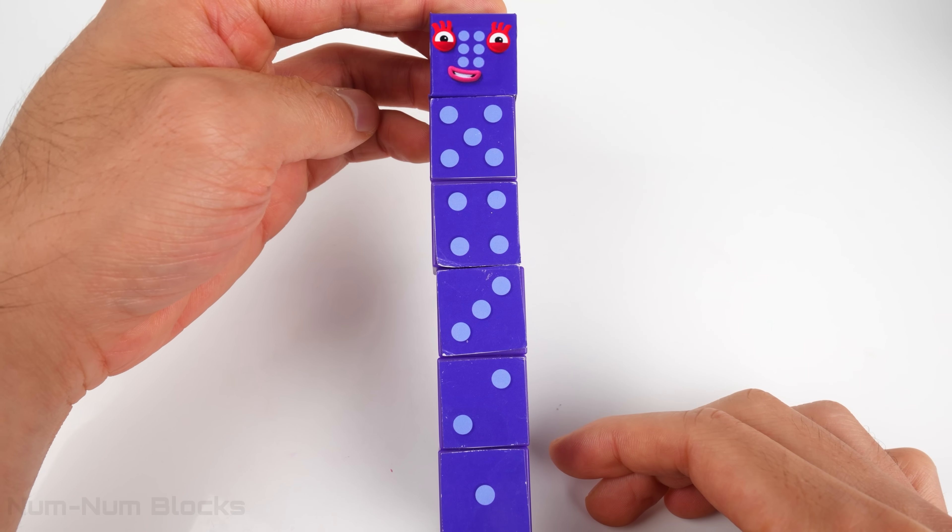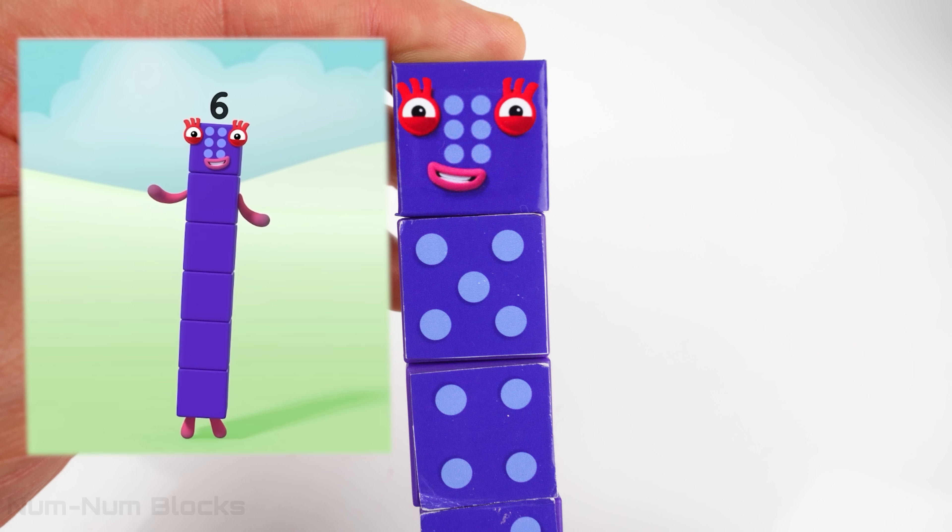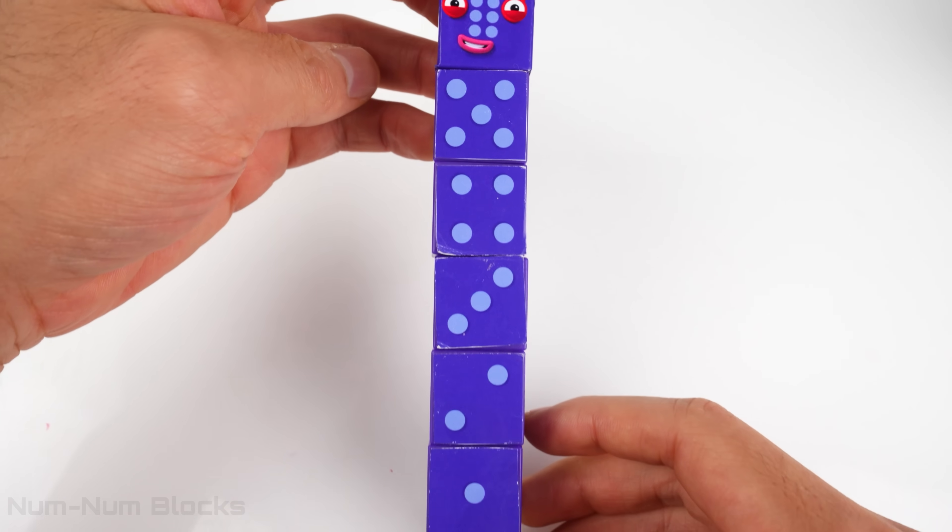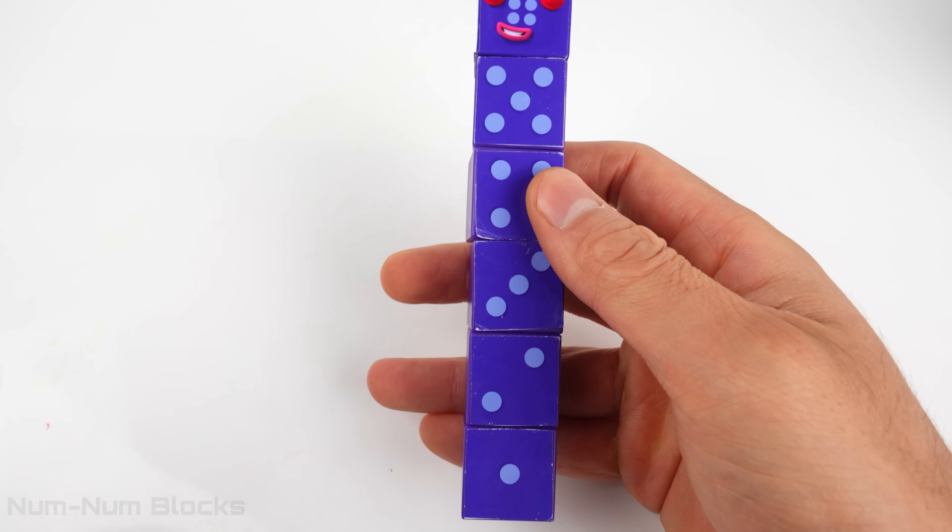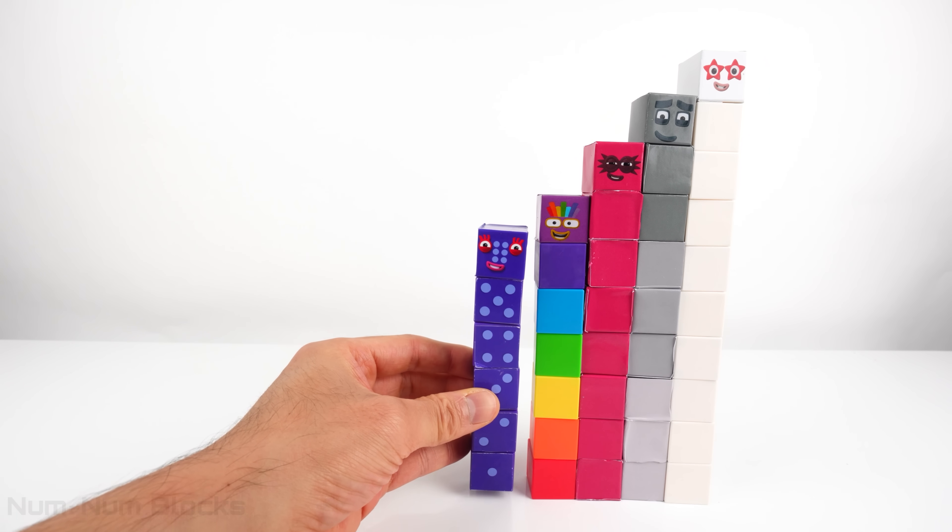Now we have six. Look at the dots on her body. They represent the numbers. I am six! Let's add six to the step squad. Six goes to the left of seven.